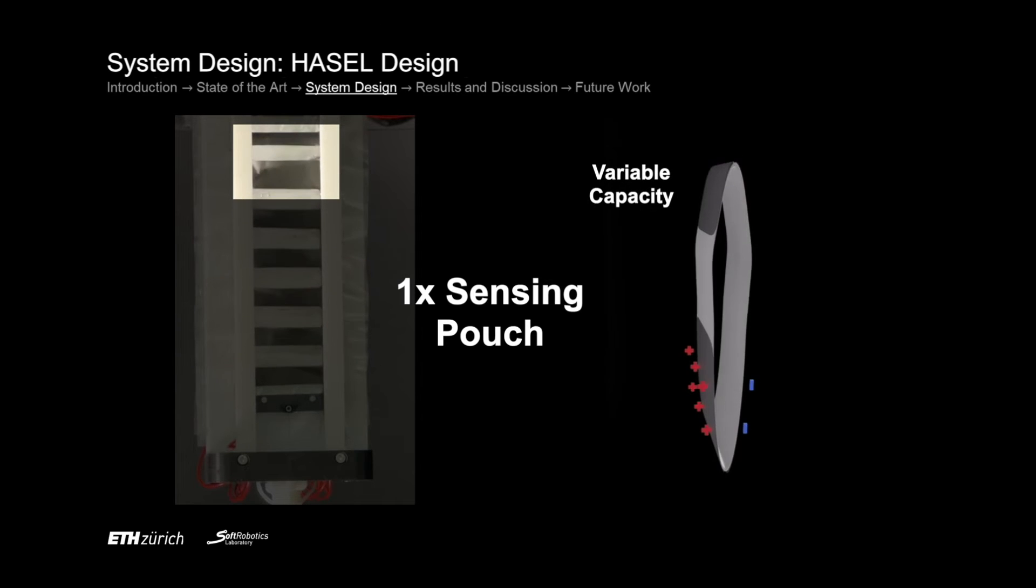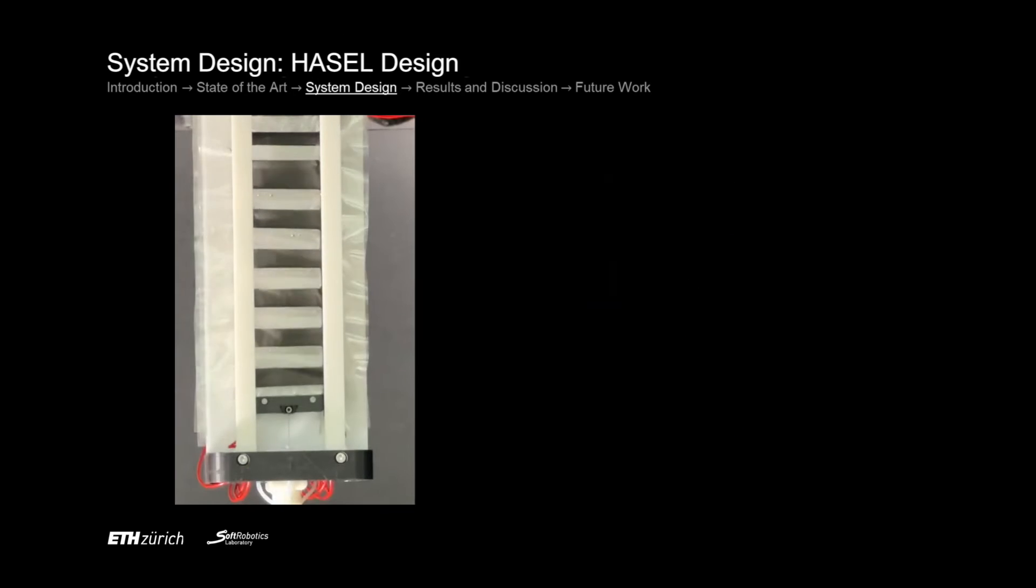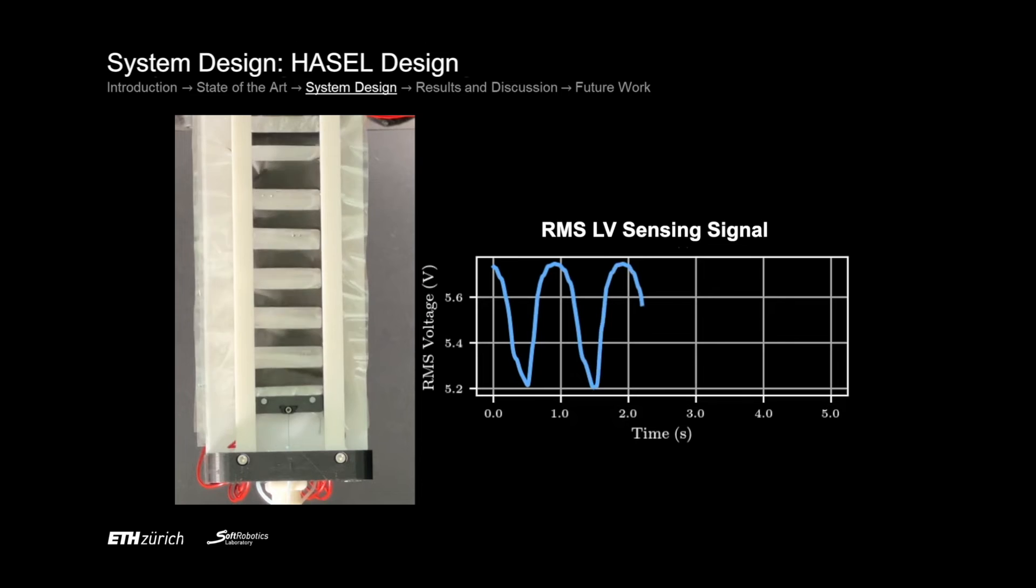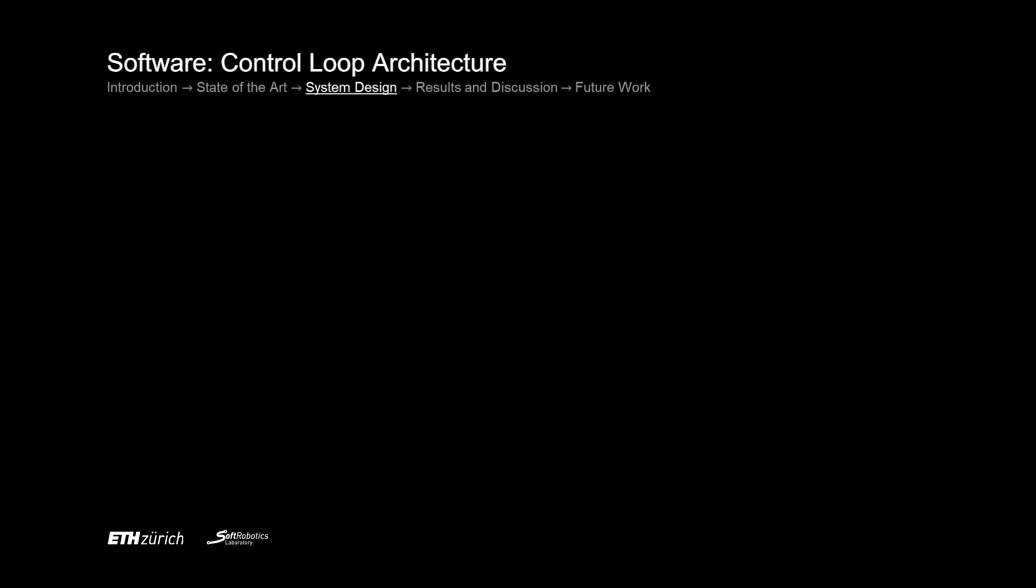Depending on the displacement of the actuator, the capacity of the sensing electrodes changes. We measure the voltage across them which uses a self-sensing signal in our control architecture.